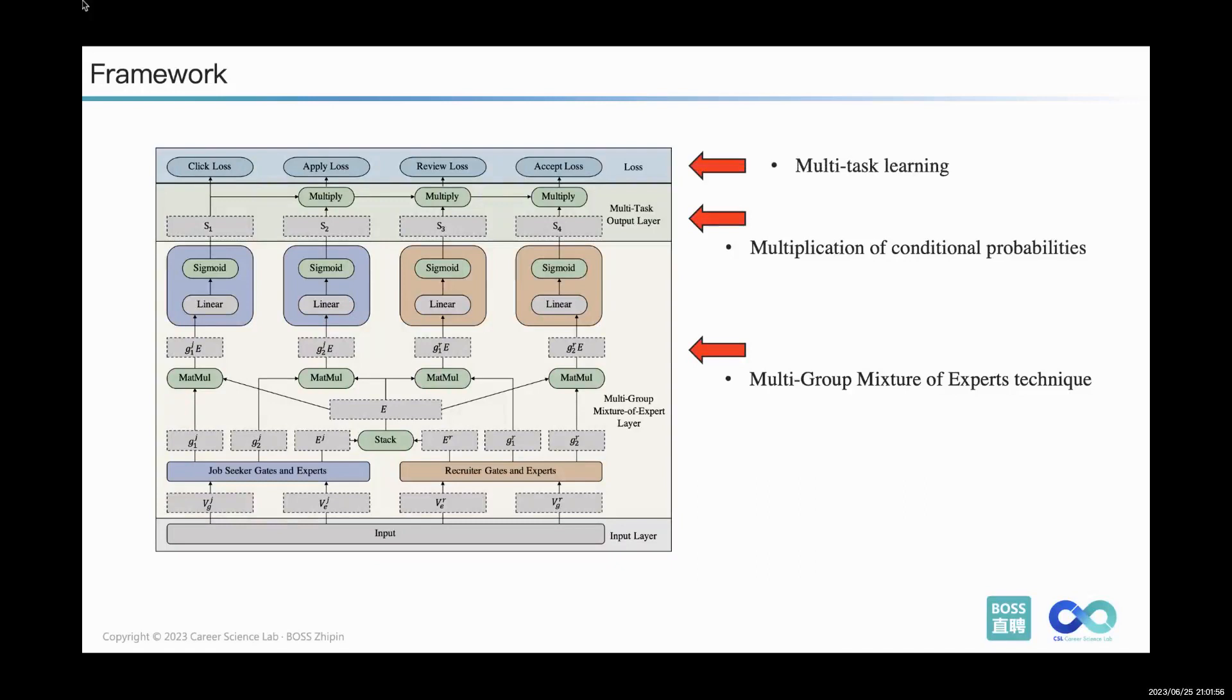Finally, BOSS leverages multi-task learning. This strategy empowers our system to optimize multiple objectives simultaneously, thereby improving the overall performance of our primary goal, which is the prediction of the matching rate.